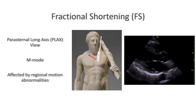Let's talk about some of the limitations of this method. Fractional shortening correlates pretty well with global left ventricular function. In patients with asymmetric and large left ventricle, or right ventricular regional wall motion abnormalities, or conduction defects, this may not be the case. Another limitation is that the endocardium is not always clearly visible, so you might have some error when you calculate it.